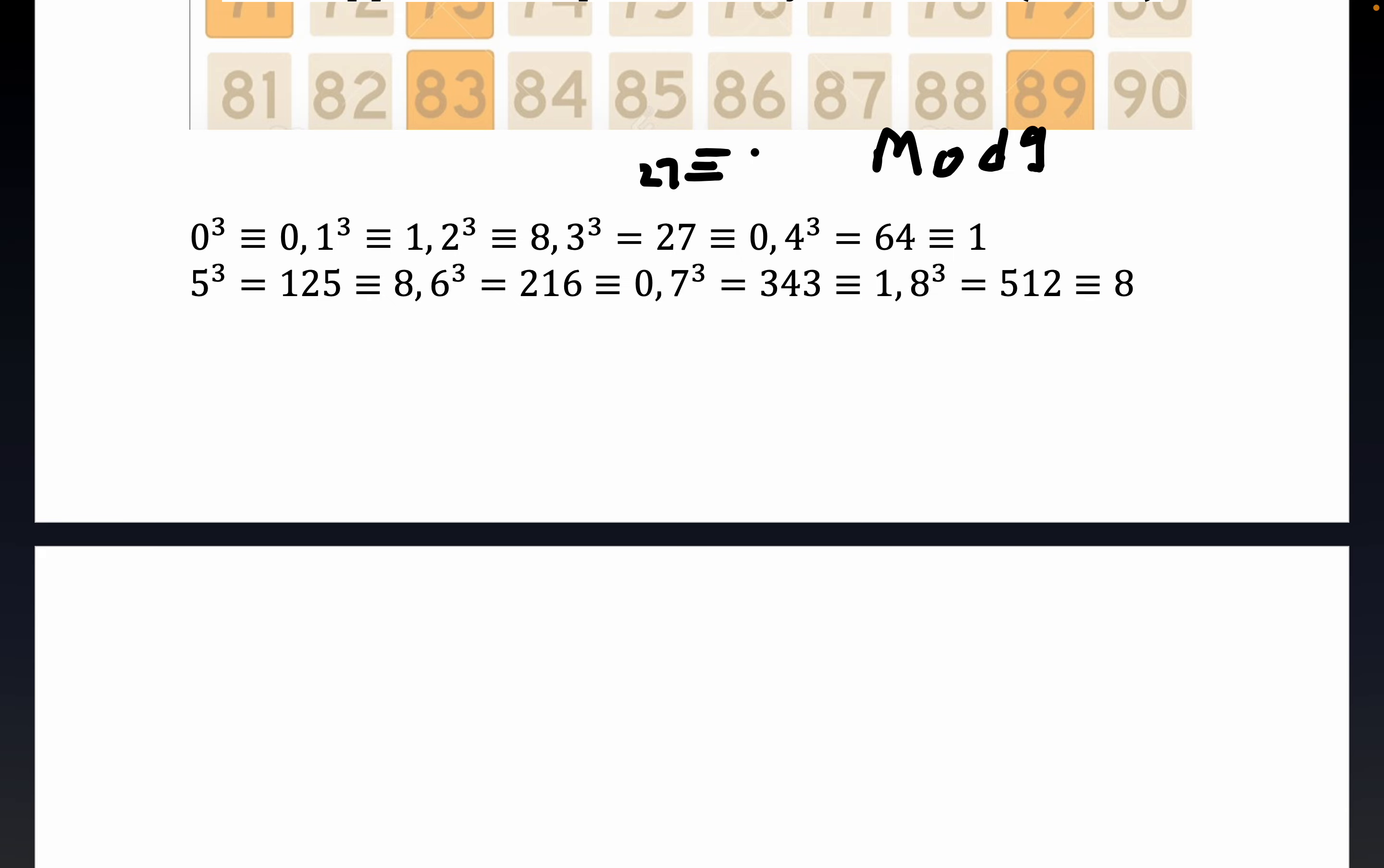Okay, so 27 is congruent to 0 since 27 minus 0 divided by 9 is 3. 4 cubed is equal to 64, which is congruent to 1 because 64 equals 9 times 7 plus 1. This is sometimes called remainder arithmetic. You're working with the remainders, and you guys can verify all of these. You can check out these calculations, but they all work out nicely.